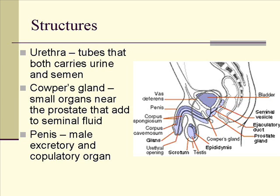The penis is the actual male excretory and copulatory organ. It's both because the urethra is in the penis and has two functions — it carries urine and it also carries semen. That's what makes it part of both systems.